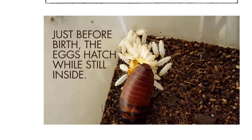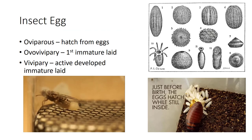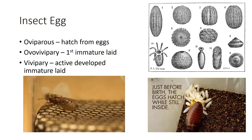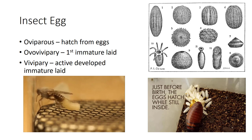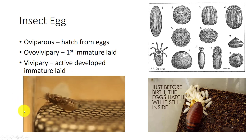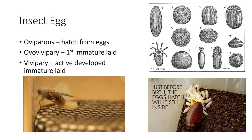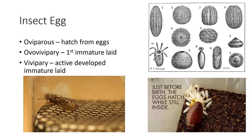In the last type of egg development, growth and development occurs in the female and an active, developed immature is laid. This is called viviparity and can be found in insects such as the tsetse fly. You can see that the tsetse fly is being birthed in pupal form and immediately becomes an adult fly. With aphids, they can be oviparous, ovoviviparous, or viviparous, depending on the time of year.